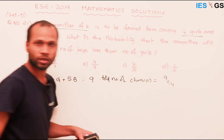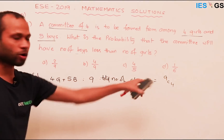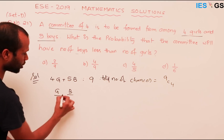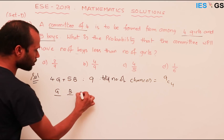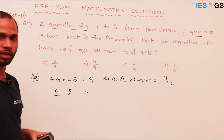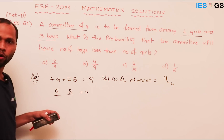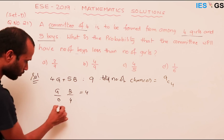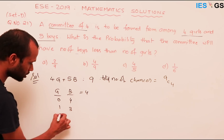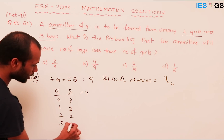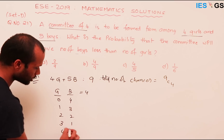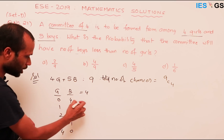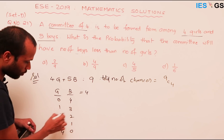Now, how can we form these four people? The number of girls and boys must always total four. The possibilities are: zero girls and four boys, one girl and three boys, two girls and two boys, three girls and one boy, and four girls and zero boys. In each case the total comes to four.